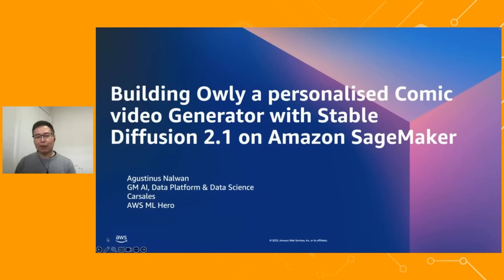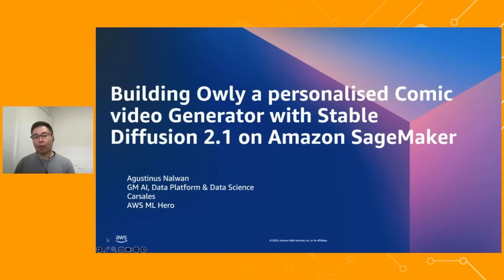Hi guys, my name is Agusinus Nelwan, and I'm the GM of AI, Data Platform, and Data Science at Garsales, and also an AWS Machine Learning hero. And in this talk, I'm going to share how I built OLLI, a personalized comic video generator with Stable Diffusion 2.1 on Amazon SageMaker.